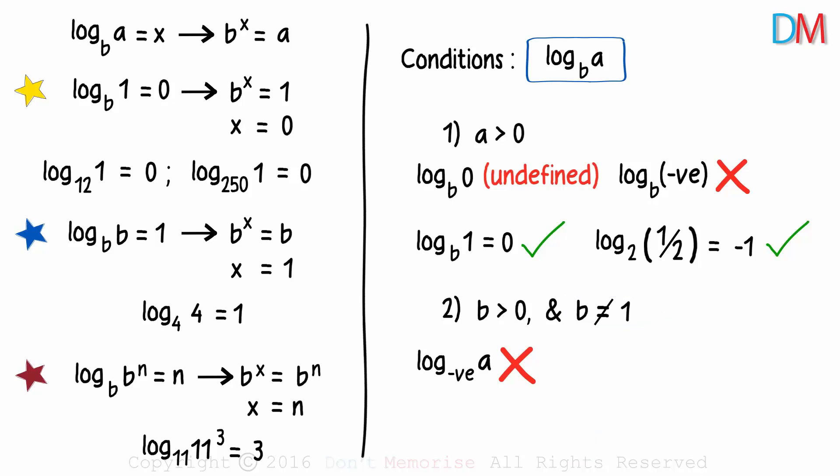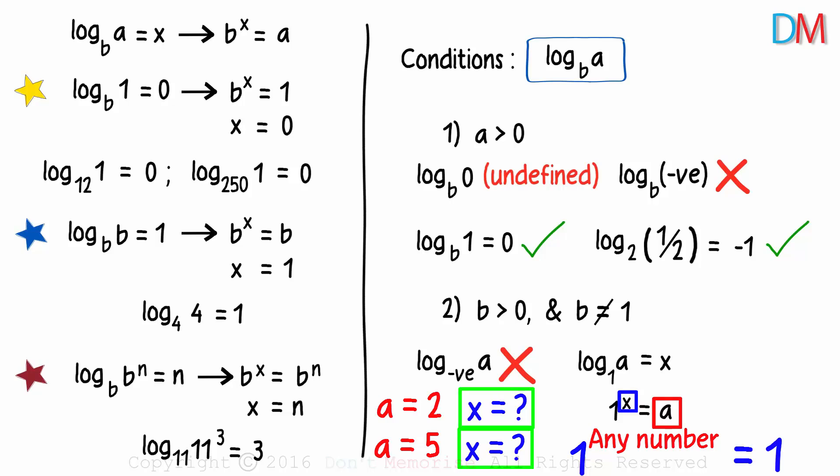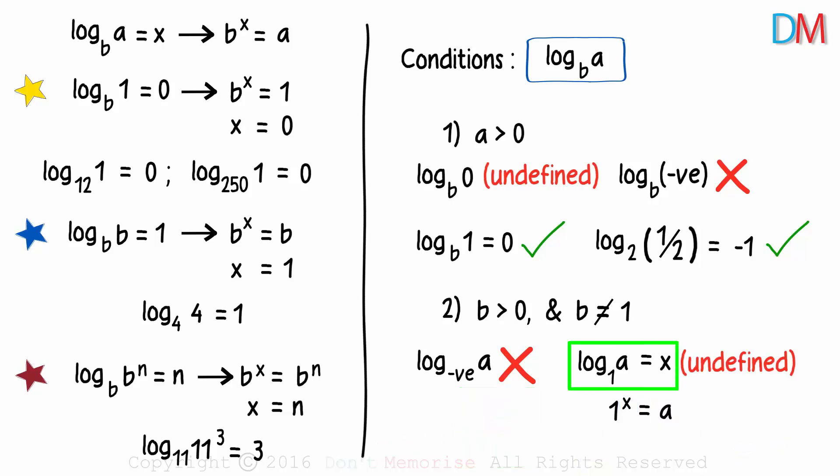Let's say the base was one and we have a logarithmic expression like log of a to the base one is equal to x. In the exponential form, it can be written as one raised to x is equal to a. What can be the value of x that gives us a? If a is two, what will x be? If a is five, what will x be equal to? We can't really come up with an answer, because one raised to any number will result in a one. Hence this will be undefined.